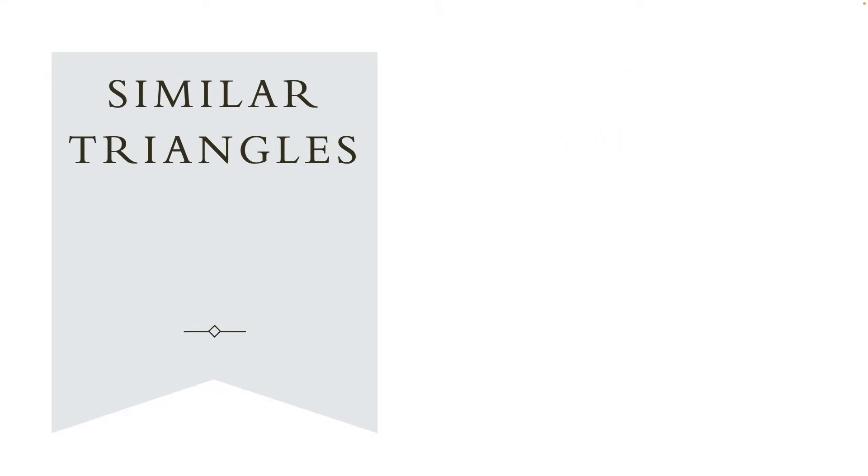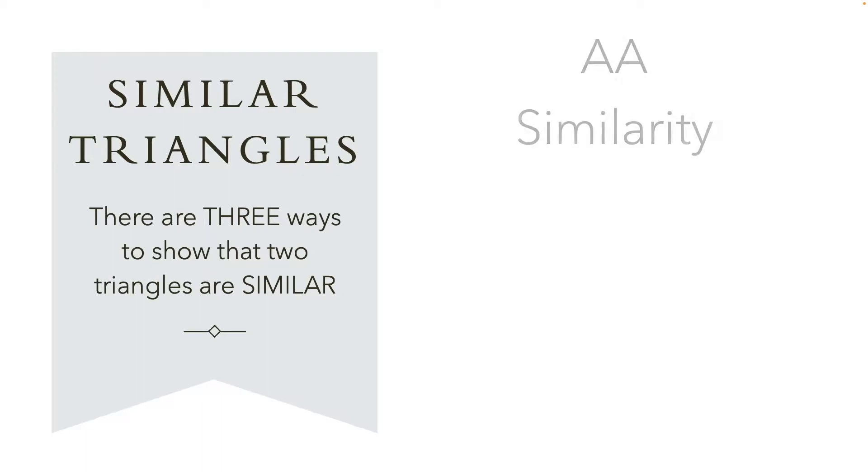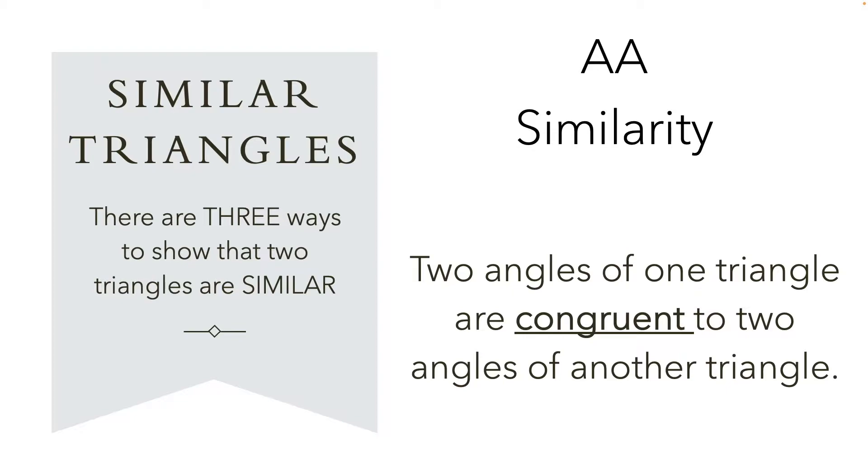Now if you remember our study of congruent triangles, we had four shortcuts to prove that triangles were congruent. Well, we have something similar with similar triangles. There are three ways to show that triangles are similar. First we have the angle-angle similarity. So we know that two triangles are similar if two angles of one triangle are congruent to two angles of another triangle. That's it. Just two pairs of congruent angles.